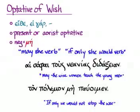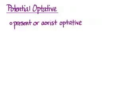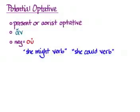The other independent optative we're going to learn is the potential optative. For this you need a present or aorist optative and the particle an. If you need to make it negative, the negative will be ou. The default translation for potential optative is 'she might verb' or 'she could verb.'